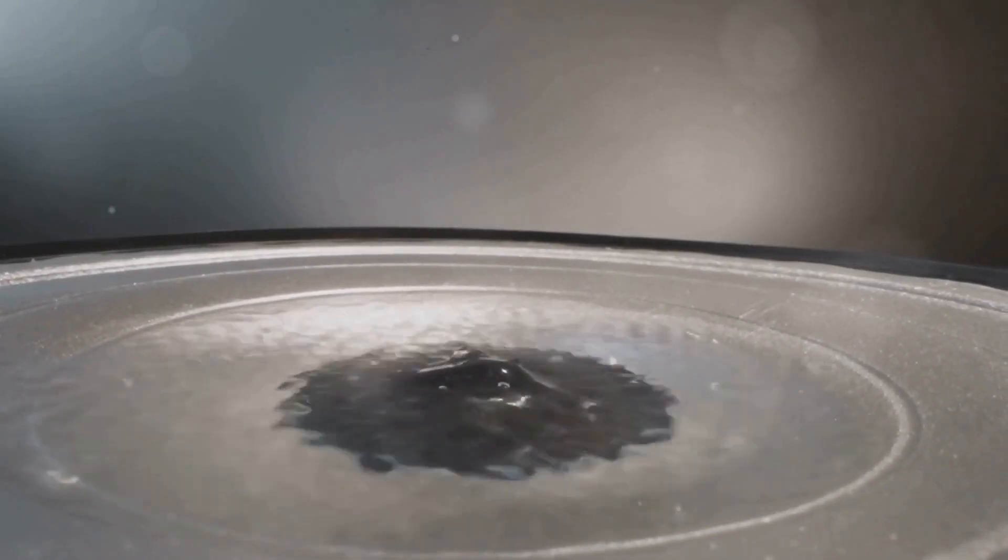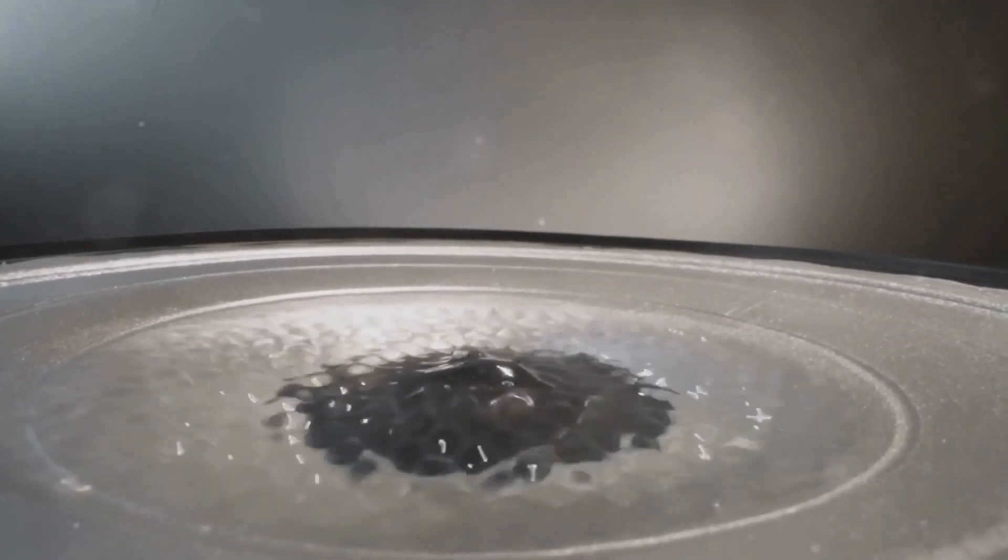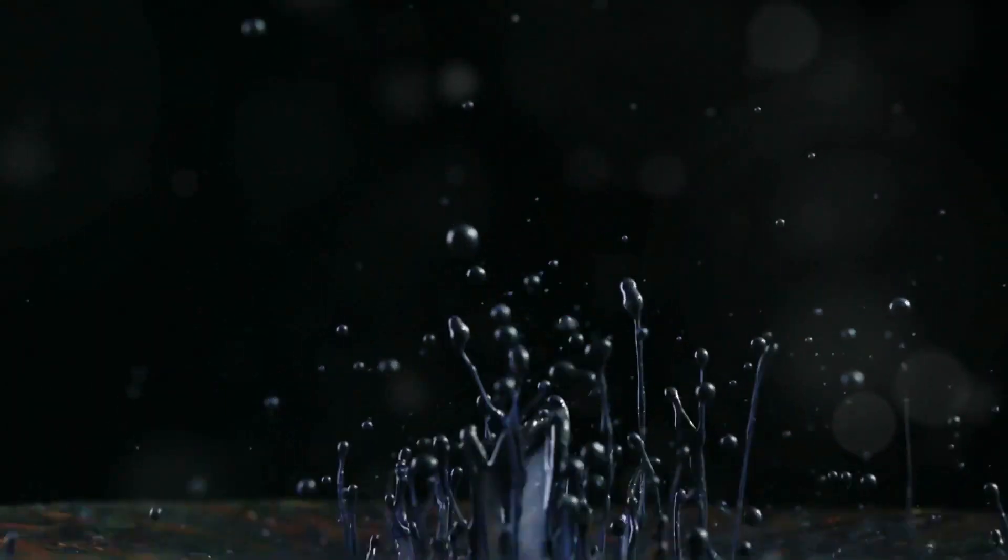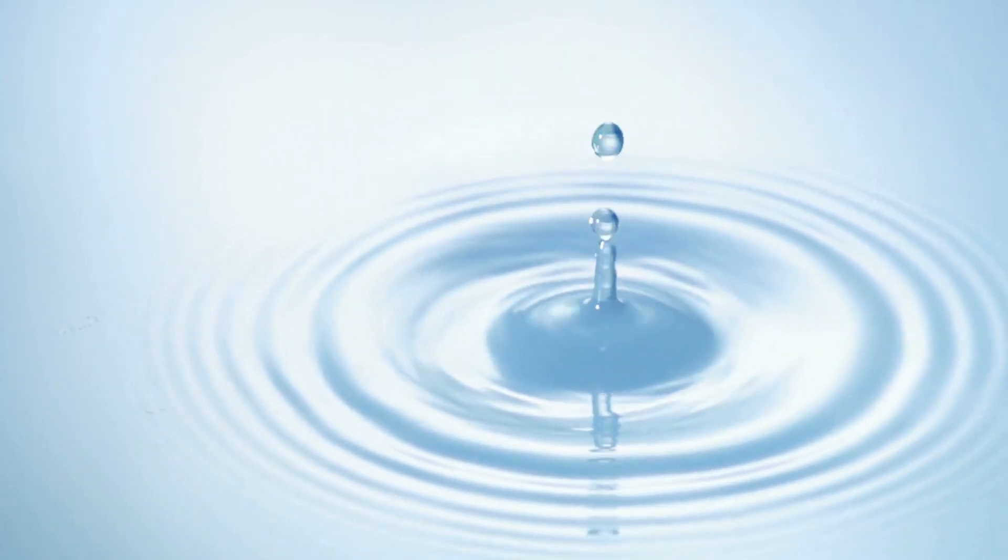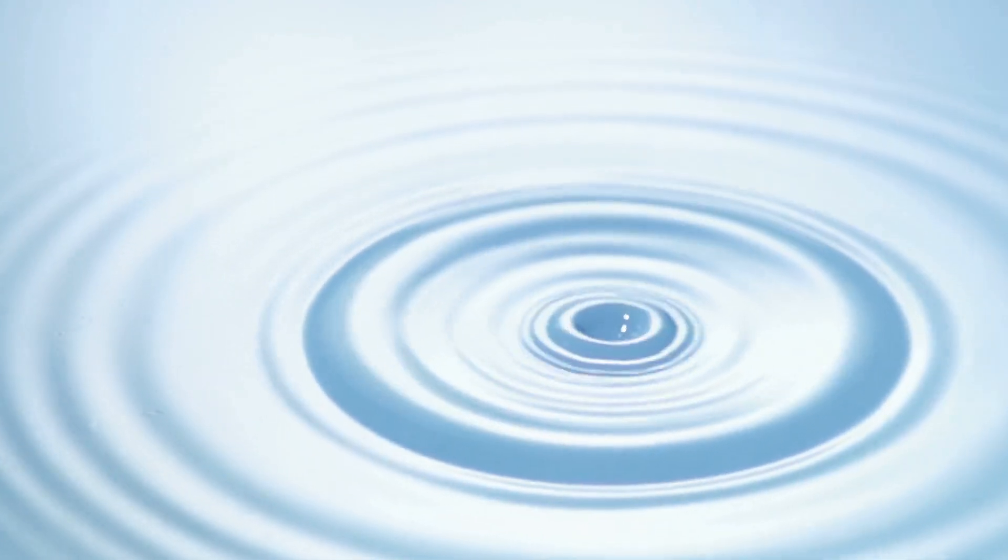While bouncing droplets often exhibit predictable quantum-like behavior, they can also display chaos and unpredictability. Under certain conditions, the droplet's motion becomes erratic, defying simple predictions. This chaotic behavior arises from the complex interplay between the droplet and its wave field, where tiny perturbations can lead to significant changes in the droplet's trajectory.